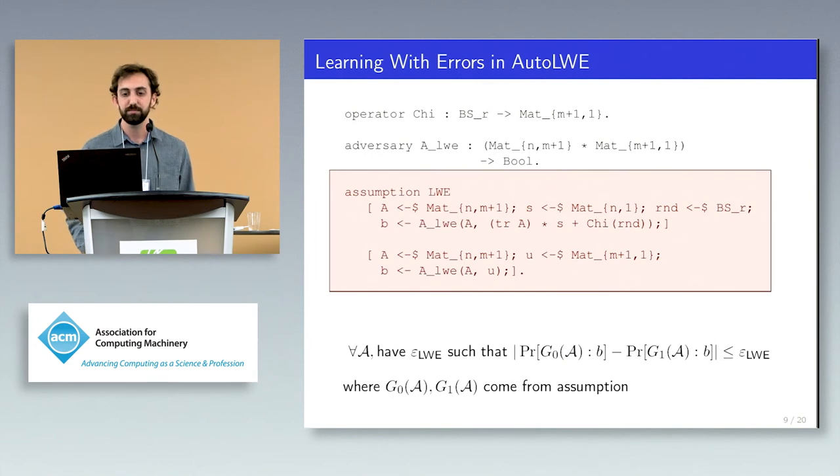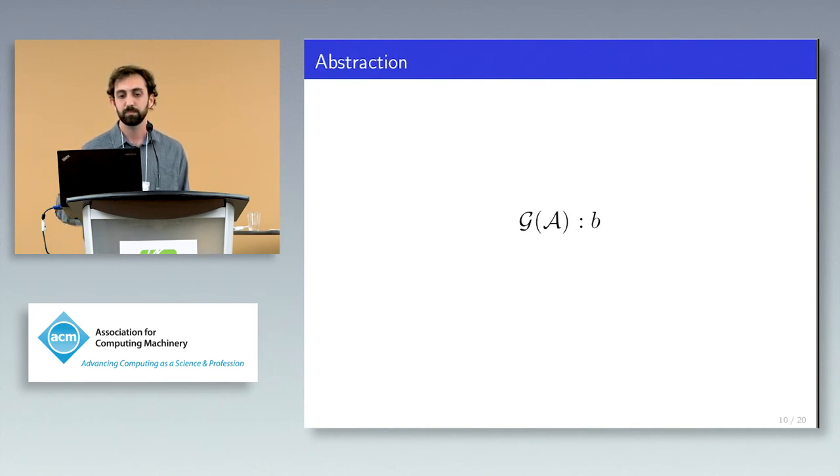Now, when we state an assumption in the system, we add an axiom which says that for all adversaries which output bit B, the probability that B equals true in the first program is close to the probability that B equals true in the second. The first program gives the adversary a matrix along with noisy inner products, while the second program gives the adversary uniformly random values.